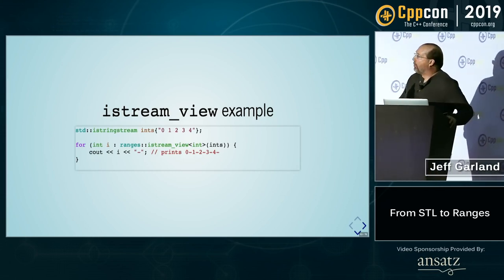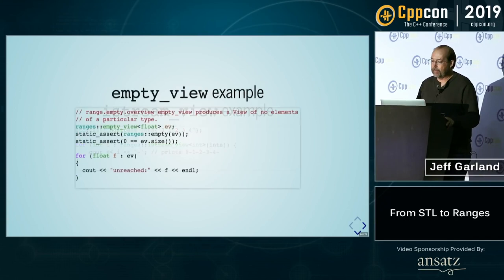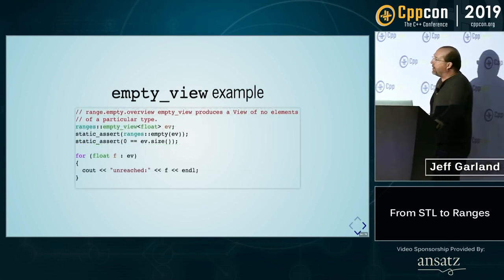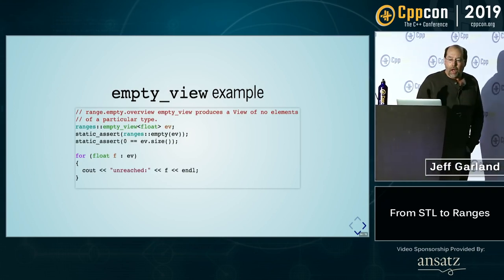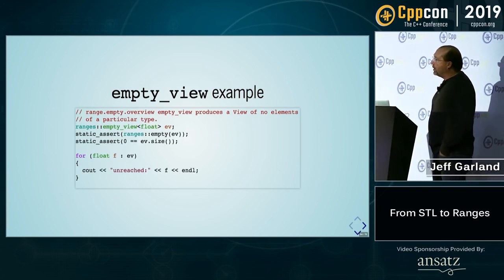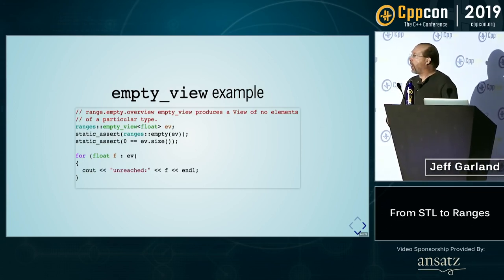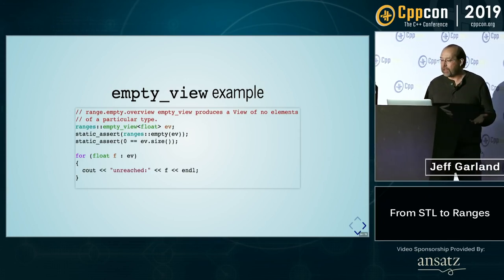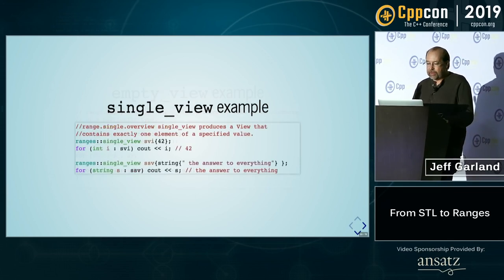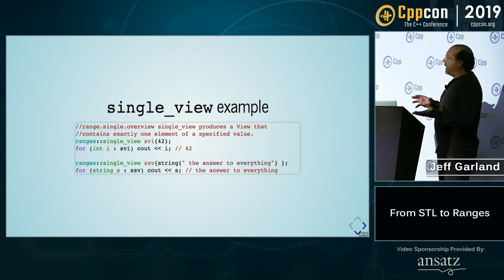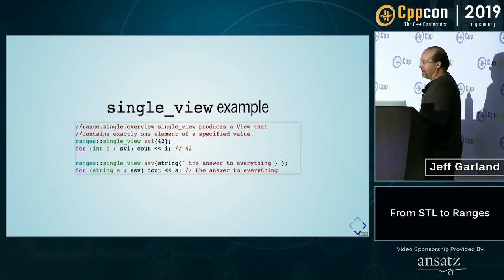Another one is istream_view — if we want to iterate over an input stream. In this case we're basically parsing ints out of a string. Empty_view is a special case you might use in development of your own functions and views — it would come in particularly handy where you might have a branch that has reached a point where you have no useful results to return, so you would return an empty view instead of something that actually has values in it. Single_view is a very similar kind of thing — it has actually only a single value, and it is a weird view in that it actually contains said value. It's the one view that's a little different.